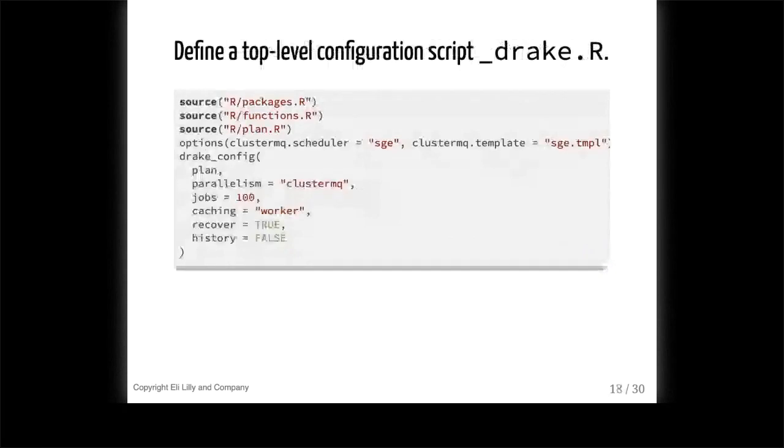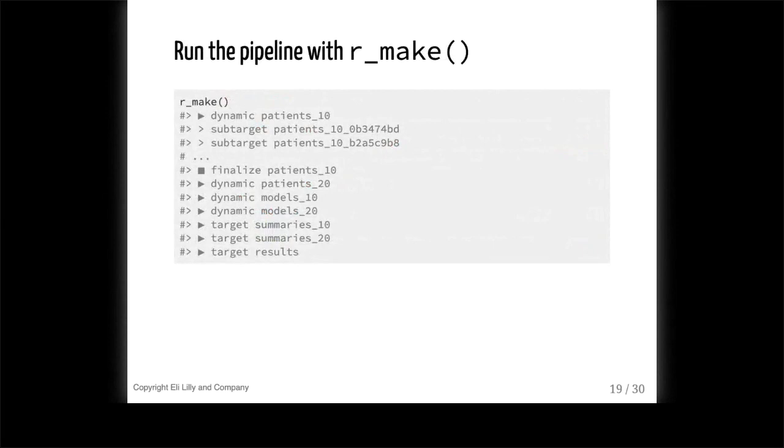And to put it all together, we use a script called underscore Drake dot R. We load our packages, functions, and plan, we set options to farm out to the cluster, and we end with a call to Drake config to put all this together. To actually run the workflow, we use a function called rmake. So this creates a new, clean, reproducible R process, runs the underscore Drake dot R file to populate the new session. It resolves a dependency graph, and it runs the correct targets in the correct order from that dependency graph and writes the return values to storage. Throughout this whole process, Drake distributes targets across the Sun Grid Engine cluster we configured it with. You can also configure it with Slurm or Torque or just the cores on your local laptop. Drake automatically knows from the graph which targets to run in parallel and which need to wait for dependencies. So you don't need to think about how to parallelize your code. You can just focus on the content of the methodology.